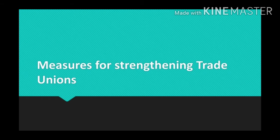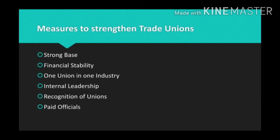Last class, we already discussed what are the problems and shortcomings of trade union in India. Today we are discussing the measures for strengthening trade union. These are some of the steps that can be taken to make trade union successful.